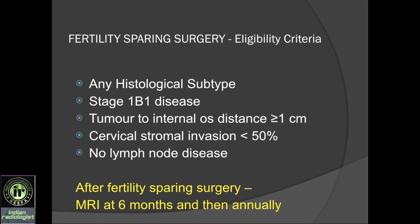Briefly touching upon fertility sparing surgery — the eligibility criteria include any histological subtype, tumor stage 1b1 or less, tumor at least 1 centimeter away from the internal os, less than 50% involvement of the cervical stroma, and no nodal disease. If the patient decides to go for this surgery, MRI is recommended first, then at six months, and then annually.